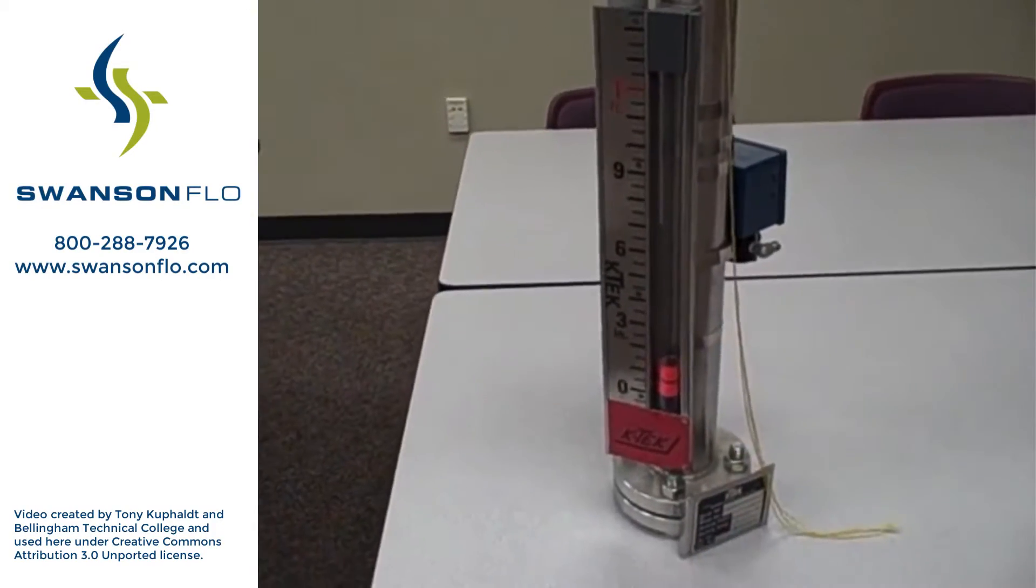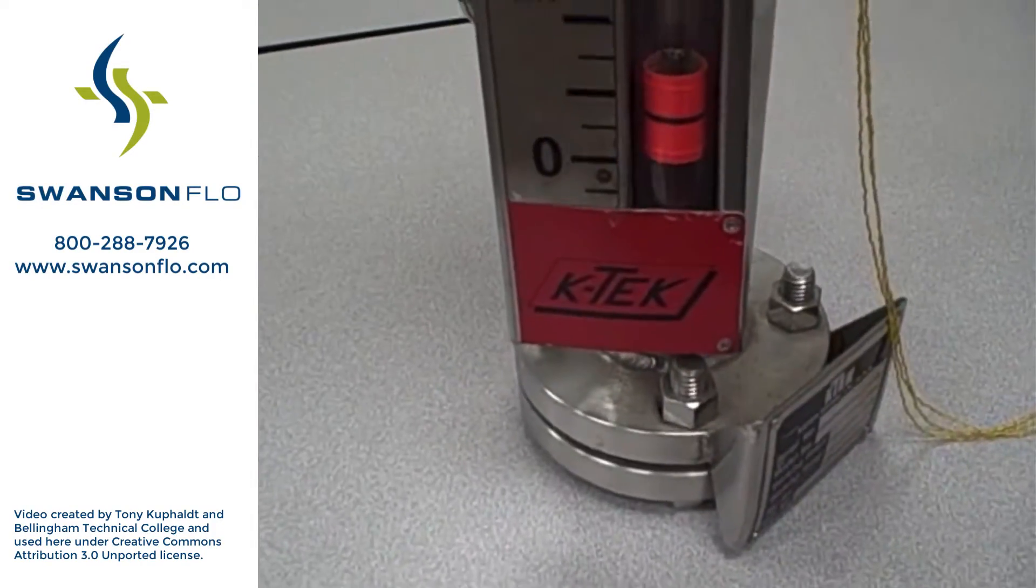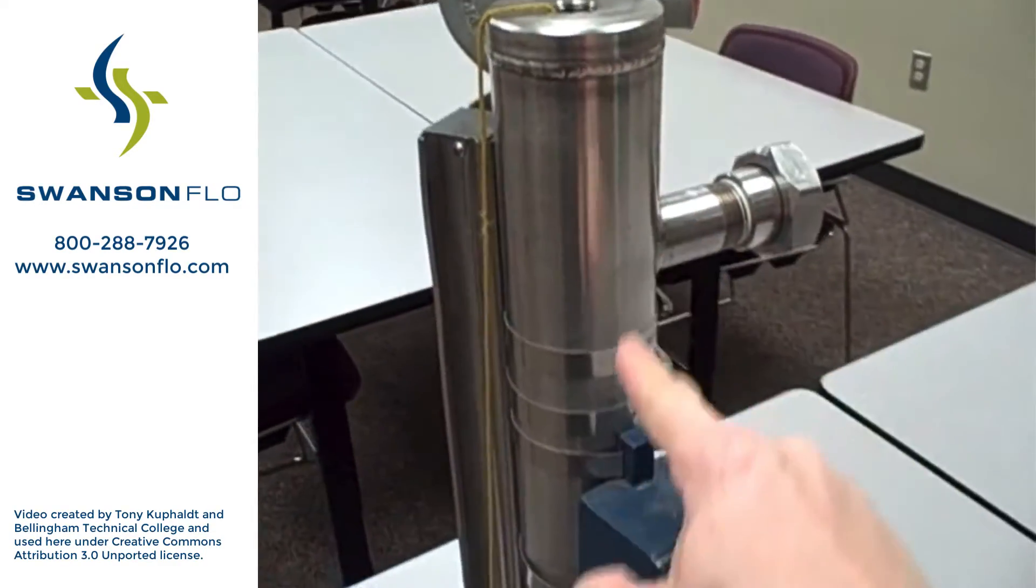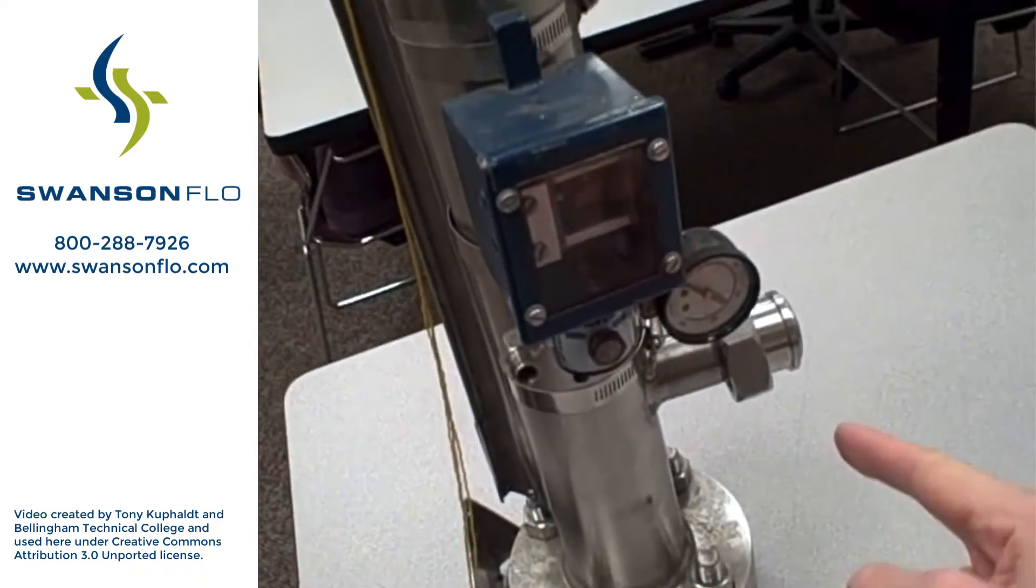This is a magnetic level gauge manufactured by KTEC. The principle of this gauge is that a pressure bearing chamber, right here, that vertical chamber, is connected to the process vessel.